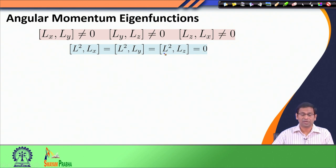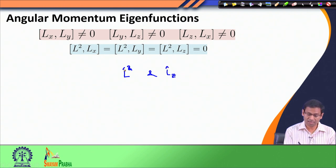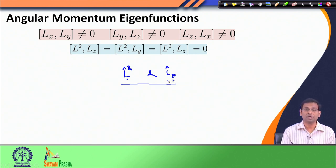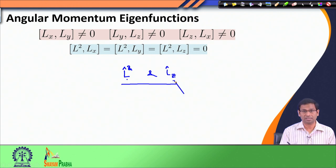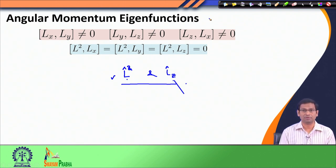So we have to make a choice. What we would do is, since L² and Lz commute, we try to find the eigenfunctions of L² operator and Lz operator — specifically, the set of eigenfunctions which are simultaneous eigenfunctions of both L² and Lz. These eigenfunctions, however, are not going to be eigenfunctions of Lx and Ly operators, because since they are eigenfunctions of Lz they cannot be eigenfunctions of Lx or Ly, as Lx and Ly do not commute with Lz.